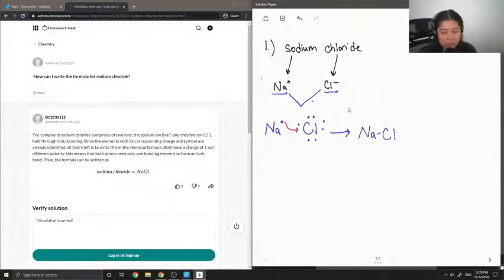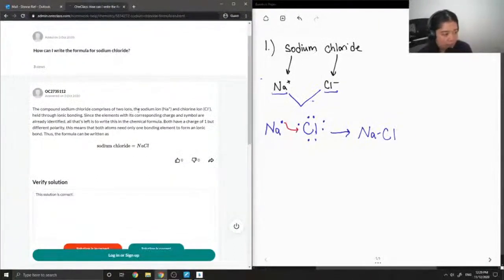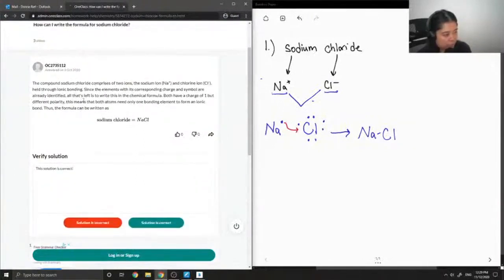Let's see what our junior tutor said. The compound sodium chloride comprises of two ions: the sodium ion Na+ and the chlorine ion Cl-, held through ionic bonding. Since the elements with their corresponding charge and symbol are already identified, all that's left is to write this in the chemical formula.